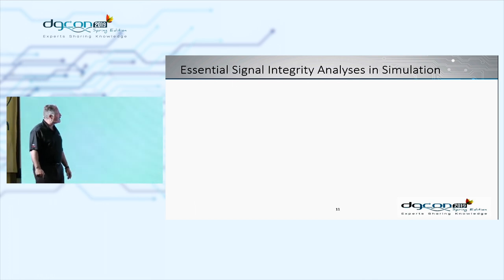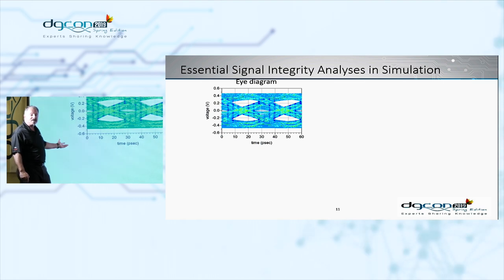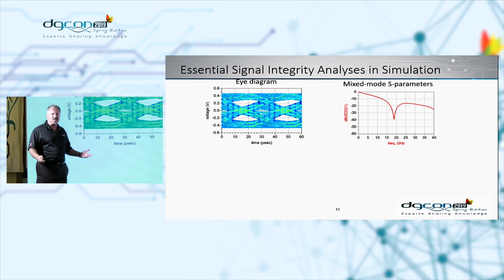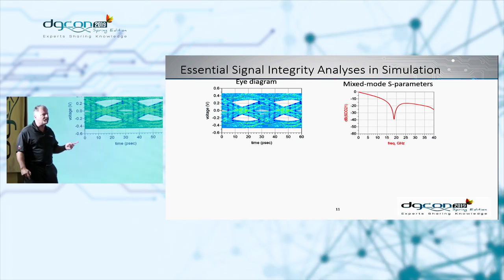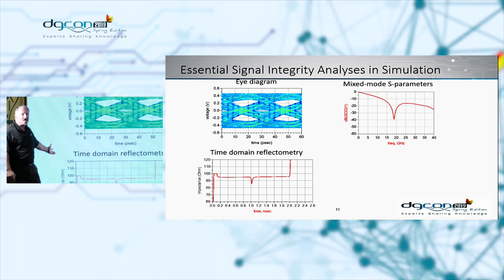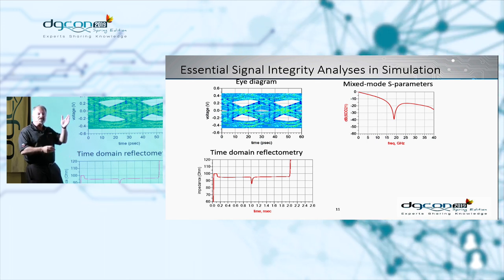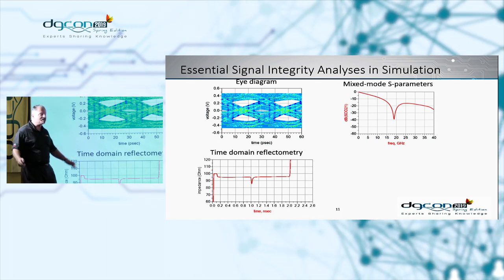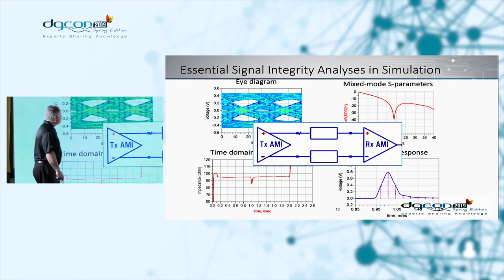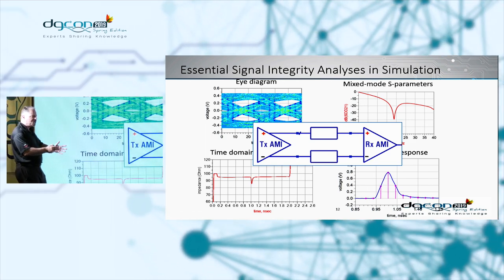The analyses we must do: eye diagrams — very fundamental. We must look at mixed-mode S-parameters. We all know S-parameters, but do we know mixed-mode S-parameters? This is something we will talk about. Of course, TDR — time domain reflectometry — very intuitive: impedance versus distance. And we'll look at something called single pulse response. We still have the transmitter and receiver with the media in between, and we can use IBIS AMI models to simulate the active parts.